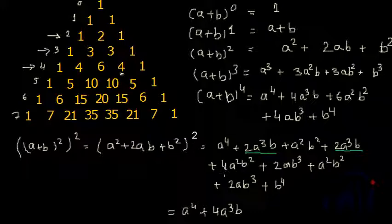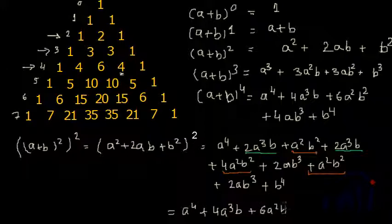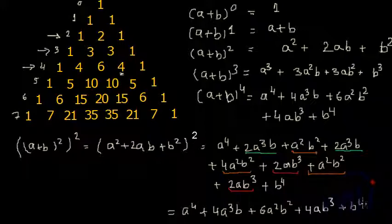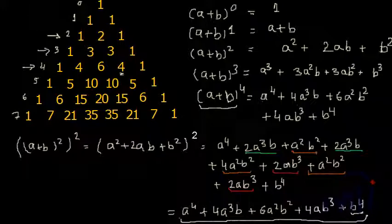Collecting all A²B² terms: 4+1+1 = 6A²B². Then the AB³ terms: 2+2 = 4AB³. And then B²×(A²+2AB+B²) gives B⁴. Rearranging everything gives A⁴ + 4A³B + 6A²B² + 4AB³ + B⁴, which is exactly the formula we derived using Pascal's Triangle. Similarly, you can find all other formulas.